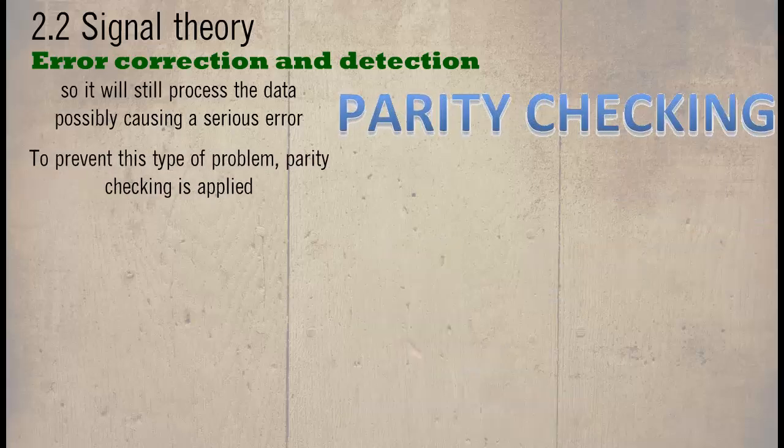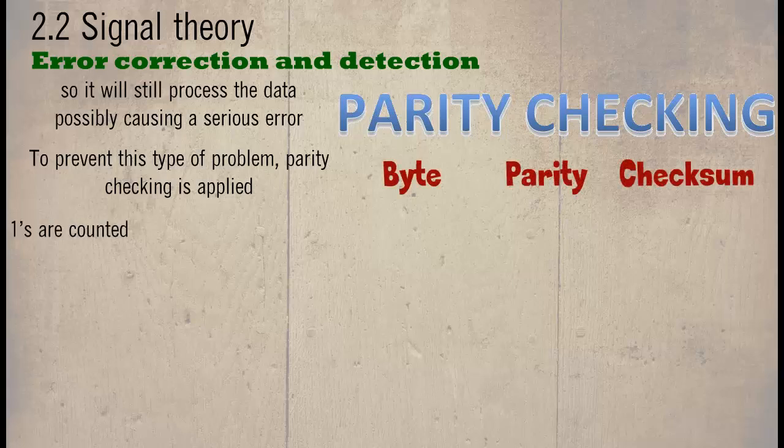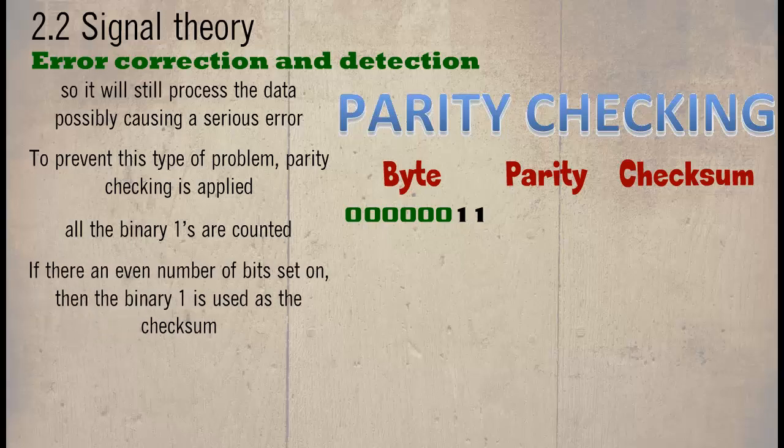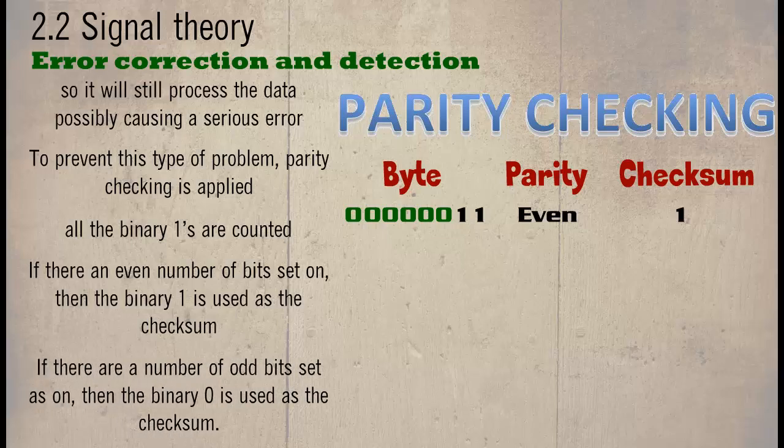To prevent this type of problem, parity checking is applied. All the binary ones are counted. If there is an even number of bits set on, then the binary 1 is used as the checksum. If there are a number of odd bits set as on, then the binary 0 is used as the checksum.